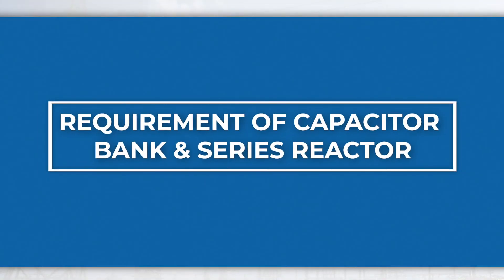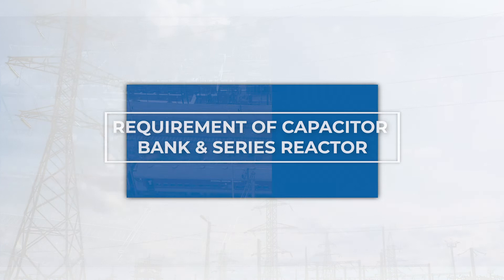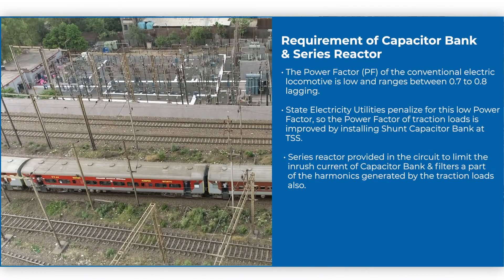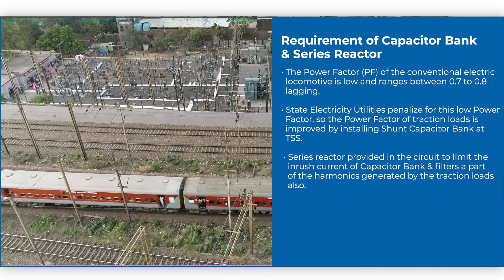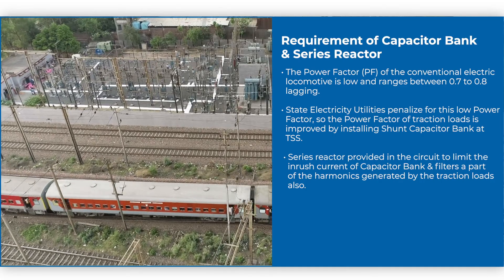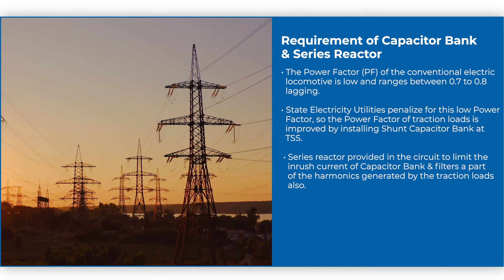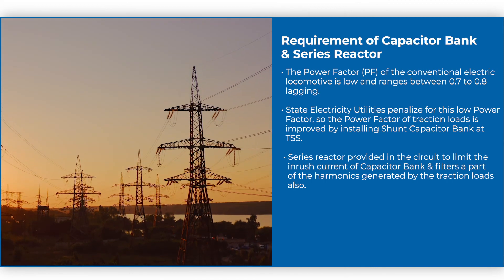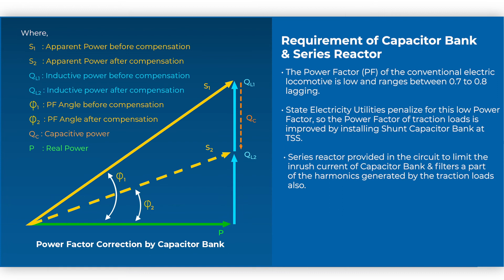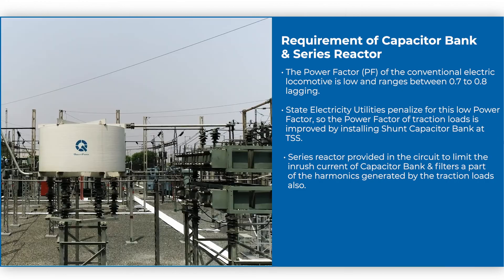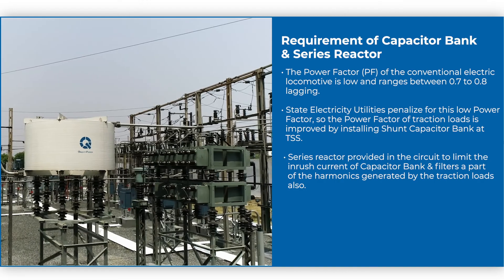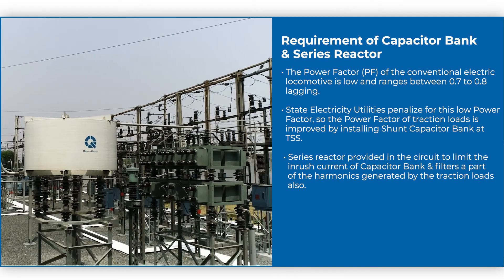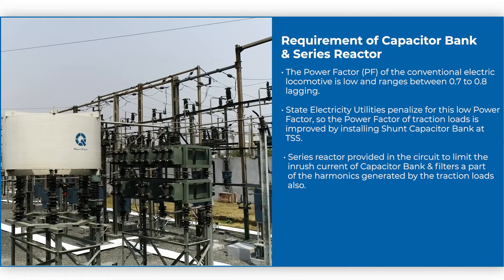The power factor of the conventional electric locomotive is low and ranges between 0.7 to 0.8 lagging. State electricity utilities penalize for this low power factor, so the power factor of traction loads is improved by installing a shunt capacitor bank at the TSS. A series reactor is provided in the circuit to limit the inrush current of the capacitor bank and to filter a part of the harmonics generated by the traction loads.